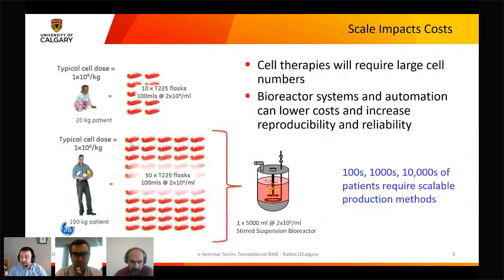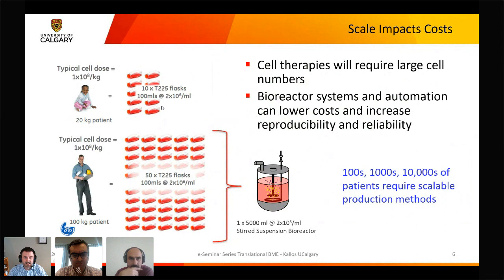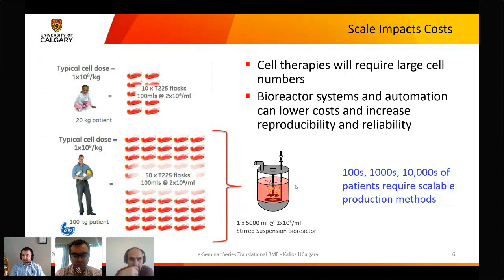Why do we care about manufacturing? Consider a cell dose of 10^8 cells per kilogram. For a smaller patient — a child — you might grow those cells in about 10 T-flasks. But for an adult, that's 50 T-flasks, each of which has to be opened and closed with difficult condition monitoring. Those 50 T-flasks can be replaced by one 5-liter bioreactor, where all cells see the same conditions and you get process monitoring and control. Bioreactor systems with automation increase reproducibility, reliability, and actually lower costs.